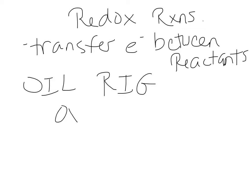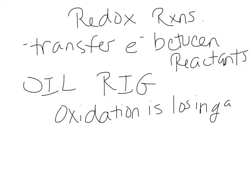Oxidation is losing an electron — that's the OIL part. When this happens, the oxidation number increases. So when an atom loses an electron, its oxidation number increases. Reduction — the RIG part — is gaining an electron. With reduction, the atom gains an electron, reducing its positive charge. By gaining an extra electron with a negative charge, the positive charge is reduced.